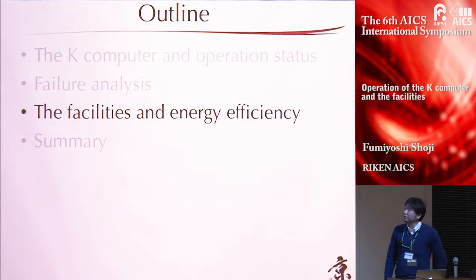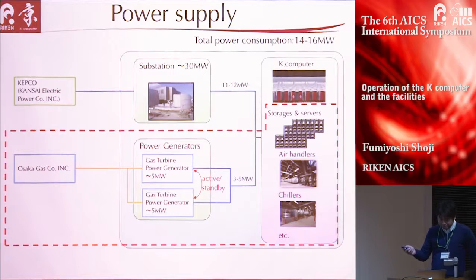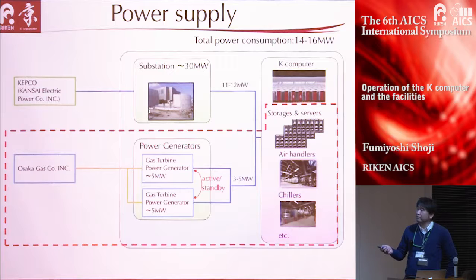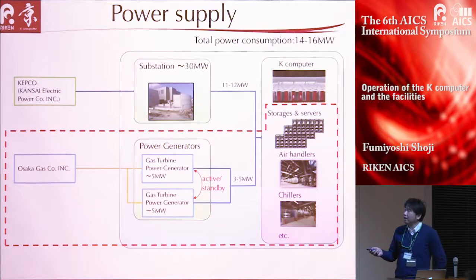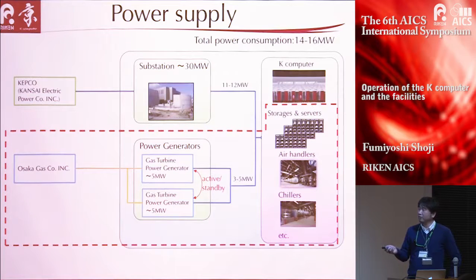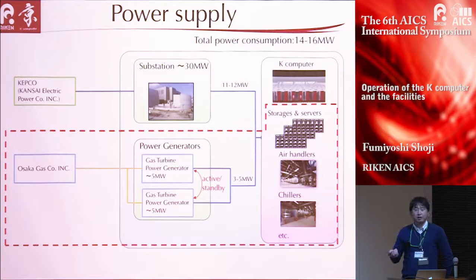The next topic is facility and energy efficiency. We have two sources of energy: power from the power supplier and gas. We generate electricity using two gas turbine power generators. In ordinary mode, one generator is active and the other is on standby, and they are exchanged every two weeks.